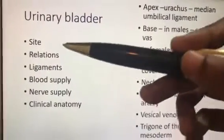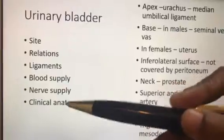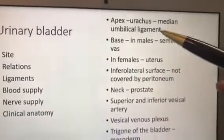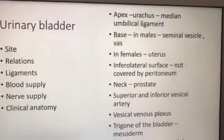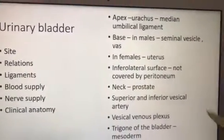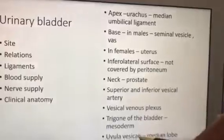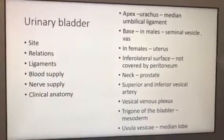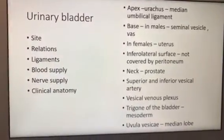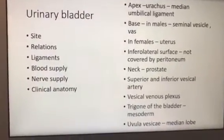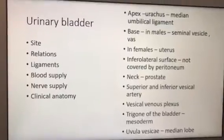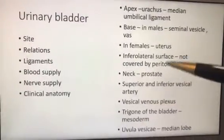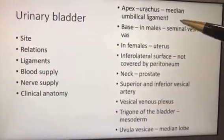The headings are: site and relations, ligaments, blood supply, nerve supply, and clinical anatomy. These are the key points alone I have written here, not the entire discussion. For the entire discussion, you have to go for the urinary bladder video. This is just a revision of key points.